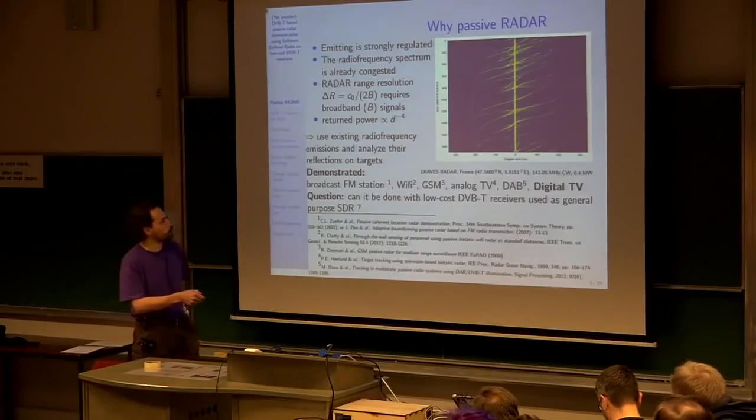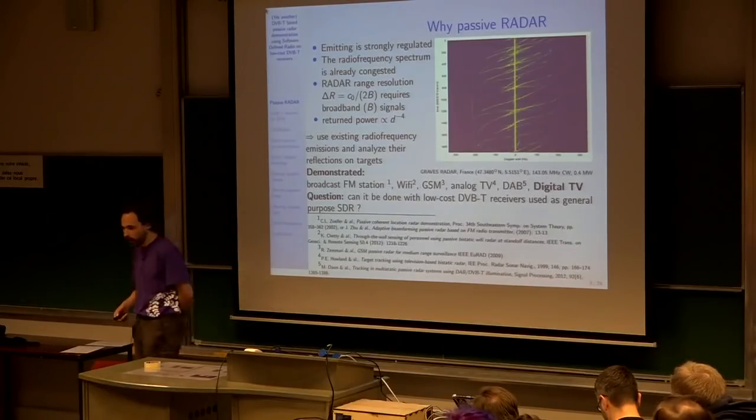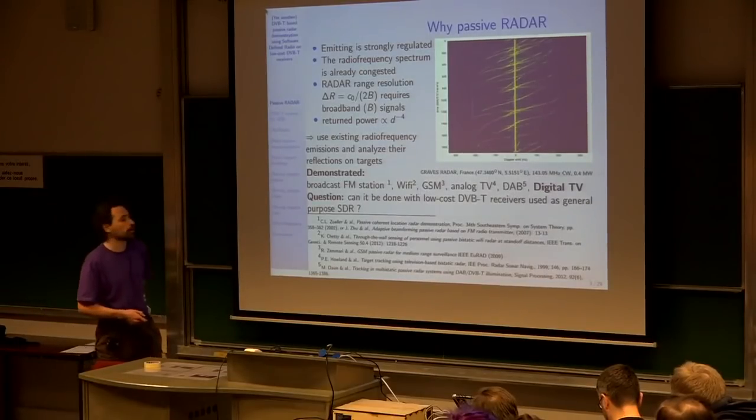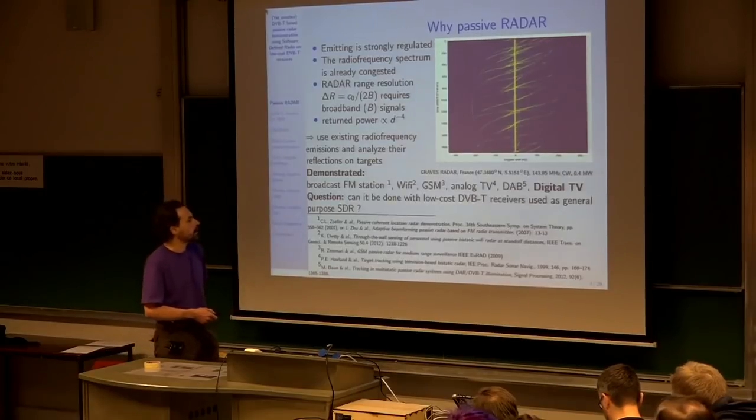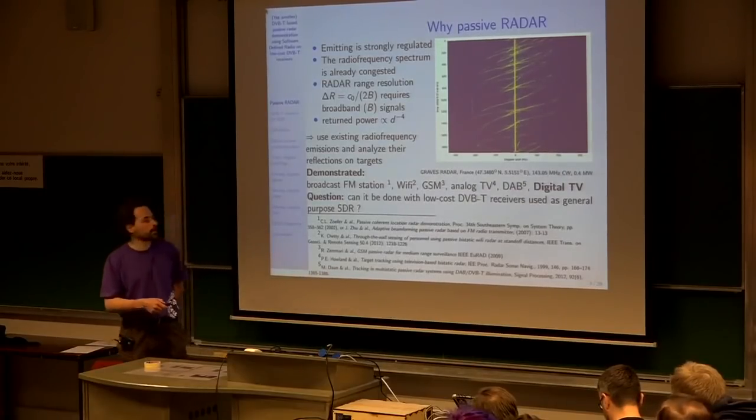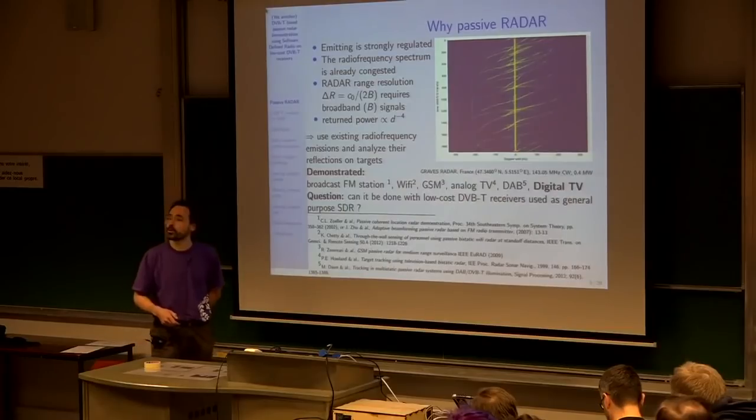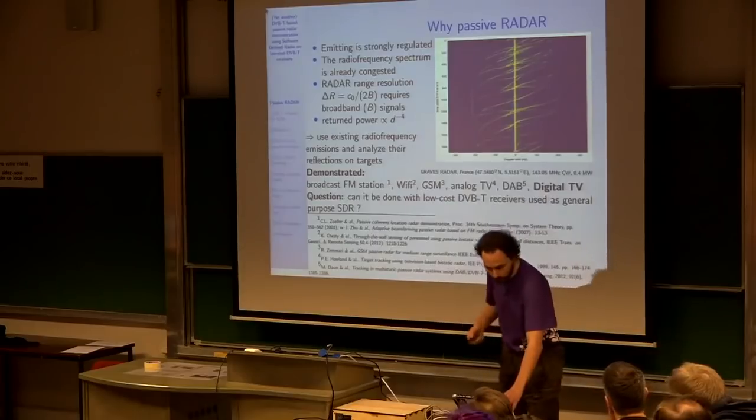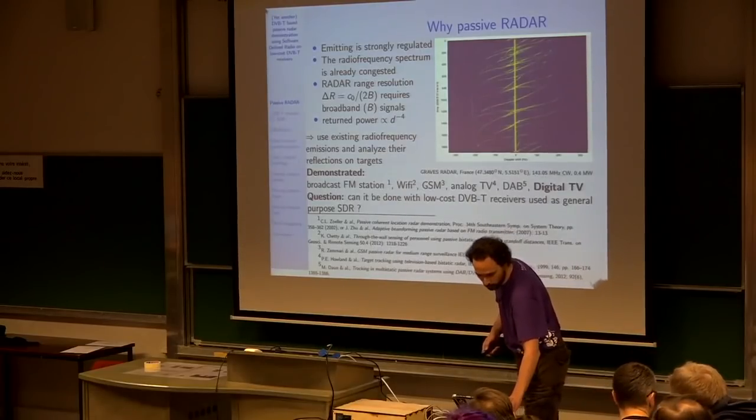Initially people have been using analog TV, which were powerful, 100 kilowatt emitters in England. GSM Wi-Fi have been used for close range, short range passive radar. And in this particular case, we'll be investigating using digital video broadcast emitters, which are now pretty much everywhere irradiating signals in all countries.